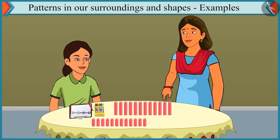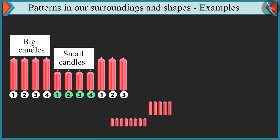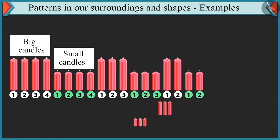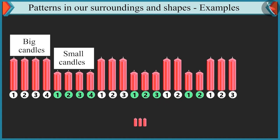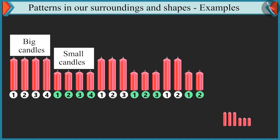Now I will make a pattern with these candles. You have to complete it. Four big candles, four small candles near them. Then again three big candles and three small candles. Then again we will place two big candles and two small candles. Now proceed with this pattern and complete it. Look carefully — each time the number of candles is decreased by one. Initially we had four-four candles, after that three-three, then two-two. So this pattern will be complete if we place one big candle and one small candle beside it.